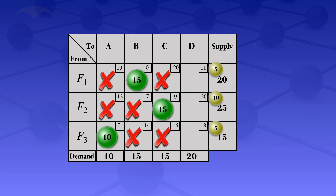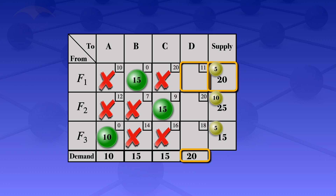Moving on, we look at the least cost in the remaining cells — that's 11, which is the smallest among 11, 20, and 18. We allocate in that cell. The supply for this row is now 5 remaining, and the demand constraint is 20. We take the minimum of 5 and 20, which is 5, so we allocate 5 units there. This meets the supply constraint for this row, so we are done with it. The column had a demand of 20 but we only allocated 5, leaving 15 remaining.